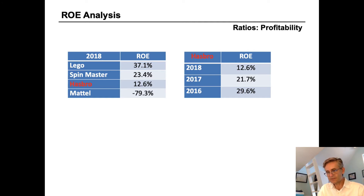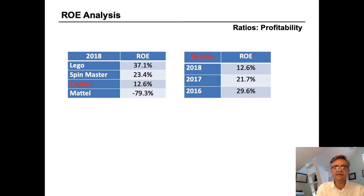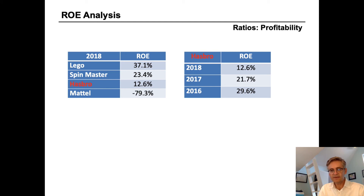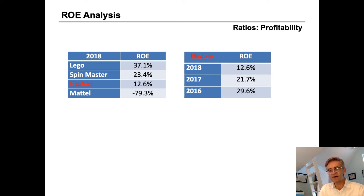Returns on equity greater than 30 percent are generally considered quite good. In fact, less than 20 percent of the companies in the S&P 500 can achieve a return on equity greater than 30 percent. Return on equity does vary quite a bit by industry, so it's important to compare within an industry — like companies to like companies. We need to be careful if the return on equity is too high or takes a dramatic increase from one year to the next, as it could indicate some increasing risk. One way you could increase your return on equity is not by increasing the numerator, but instead by decreasing the denominator. Always make sure you evaluate relative to peer companies in the same industry.